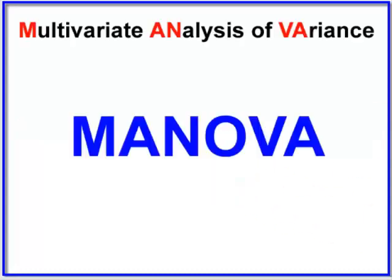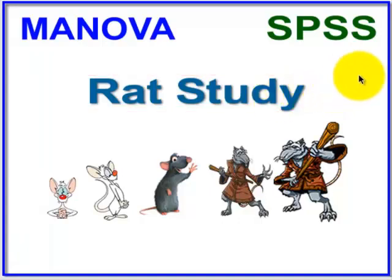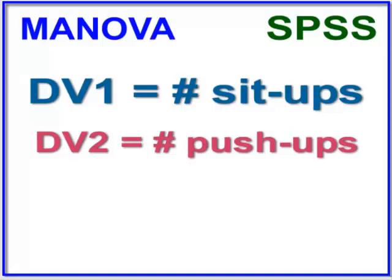Multivariate analysis of variance, also known as a MANOVA. We're going to make a quick video on how to run a MANOVA in the SPSS statistics software. DV1 is sit-ups, DV2 is push-ups. A MANOVA has to have at least two DVs that are somehow logically related, and they have to be correlated but not too strongly — the correlation has to be less than 0.8. We will find all this out in our MANOVA assumptions.